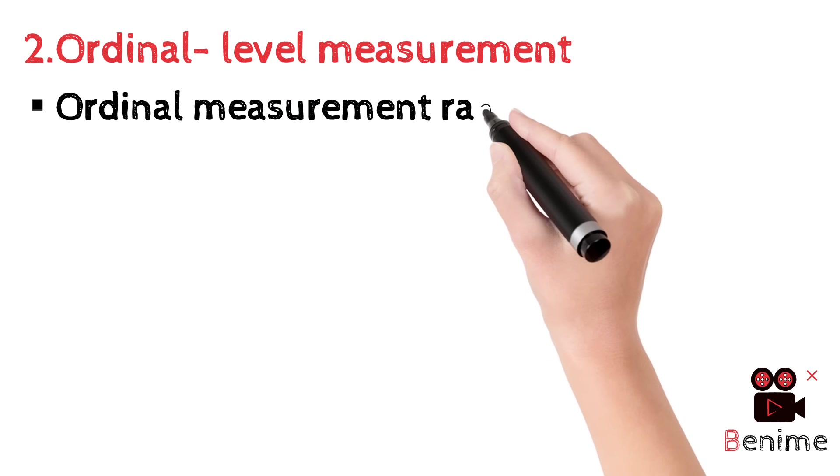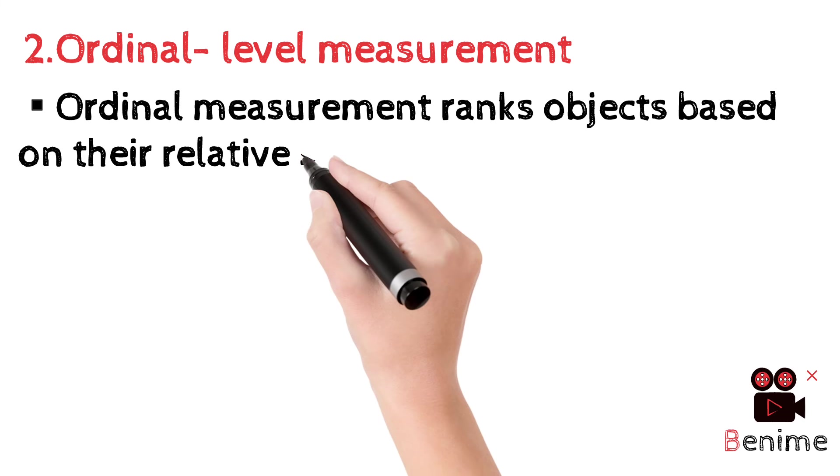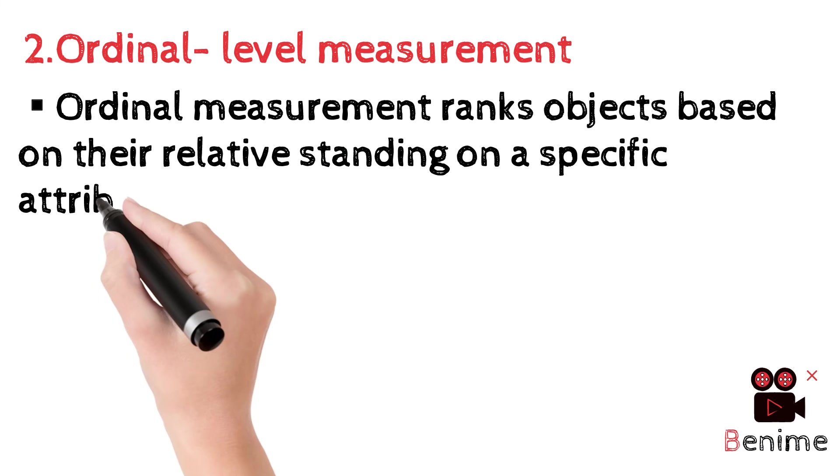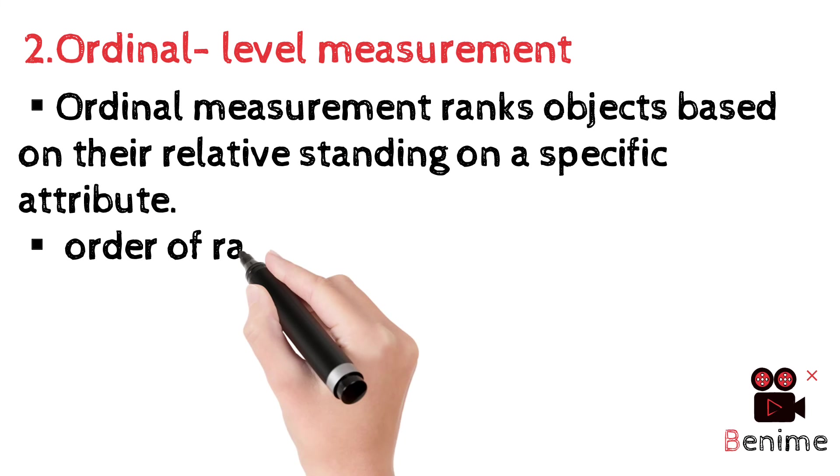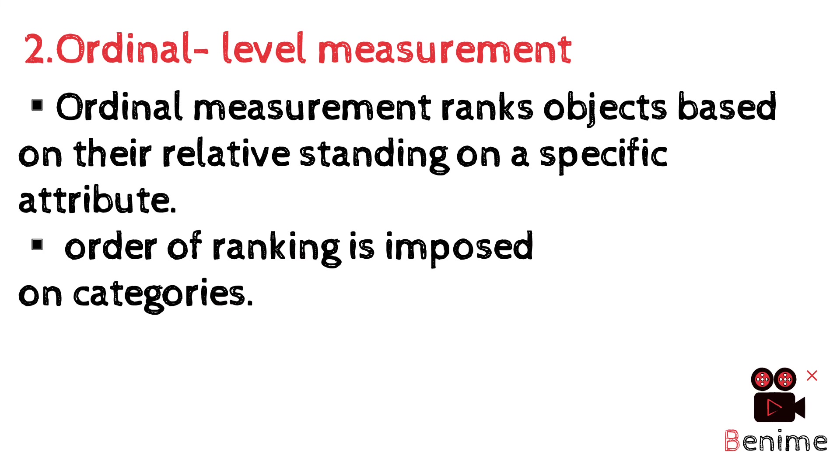Next we move on to ordinal level measurement. Ordinal level measurement is ranking of the object on the basis of the magnitude. Magnitude means size, whether it is large or small. According to the magnitude we rank the objects. Order of ranking is imposed on categories.